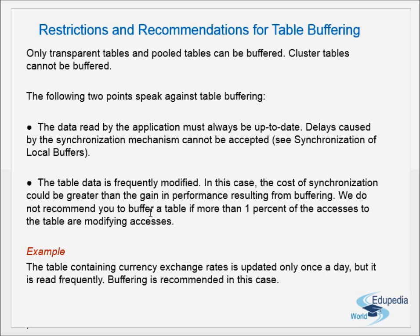The restriction on table buffering is that only tables where modifications are less than one percent should be buffered. Transparent, pool, and cluster tables are different data types of tables. The following two points speak against table buffering: the data read by the application must always be up to date, and delays caused by the synchronization mechanism cannot be accepted. You can refer to the previous video on synchronization of local buffers — performance tuning part 4b.